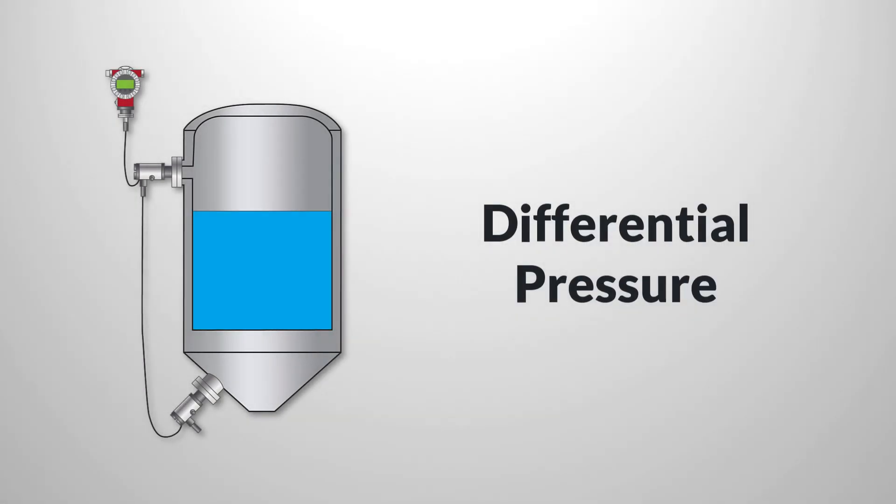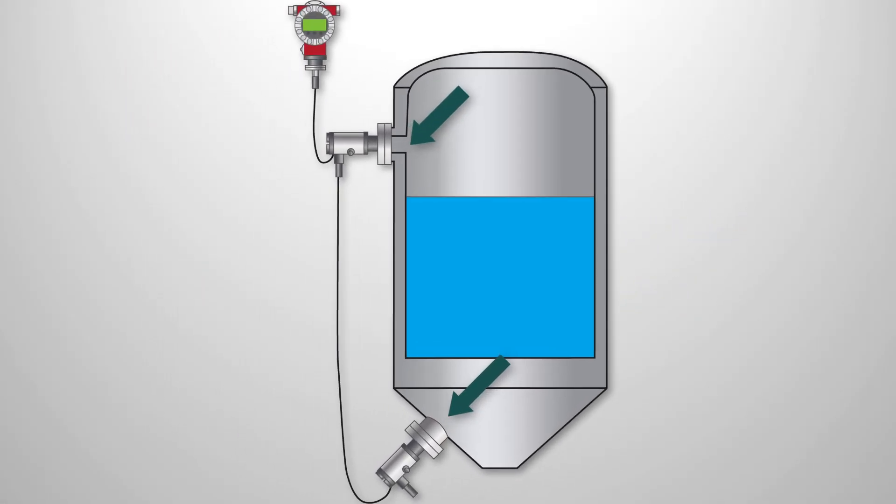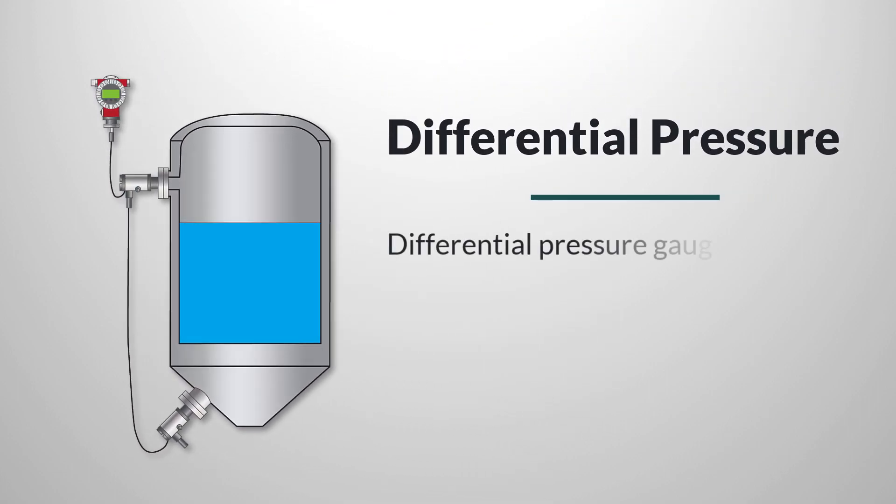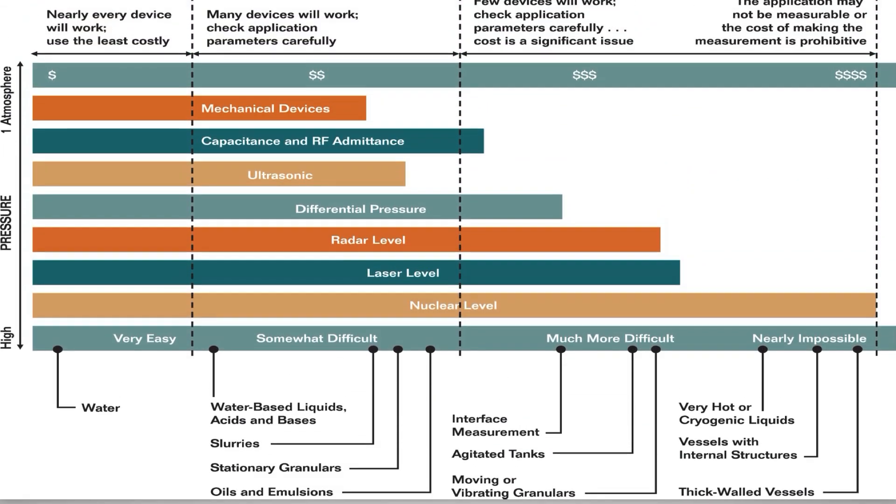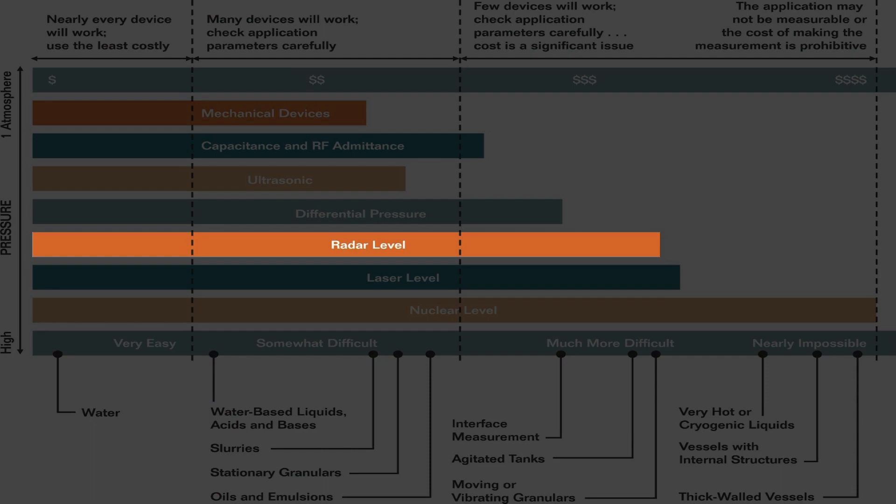Differential pressure gauges have been around a long time and have been adapted to many applications. Differential pressure devices measure tank level based on the pressure difference between the bottom of the tank and the headspace in pressurized vessels or atmospheric pressure for vented tanks. They are among the easiest instruments to isolate from the process for maintenance and calibration.